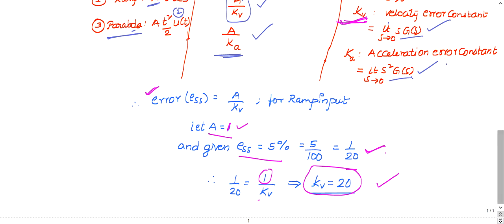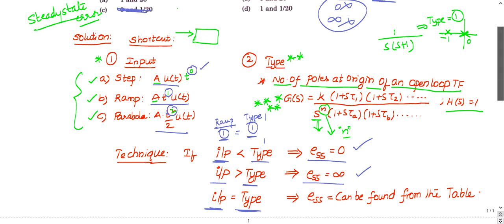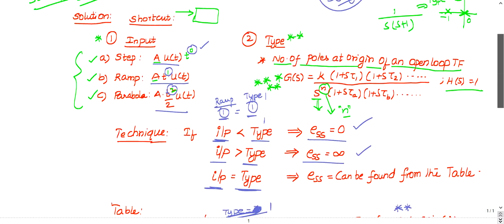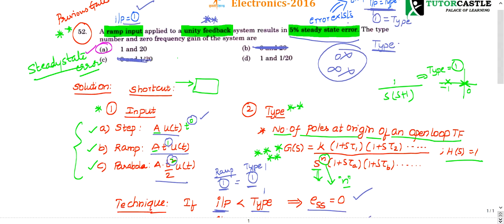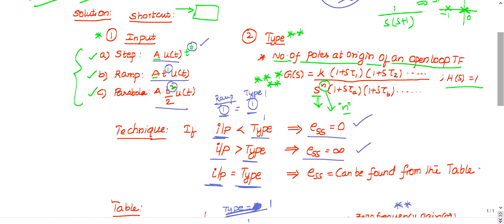This shortcut method — find input, find type, compare, then use the table — lets you solve steady state error questions efficiently. This is a previous GATE question, so practice previous year GATE questions. The correct answer is option A. If you have any queries, post them in the comment box and subscribe to the channel for more updates.